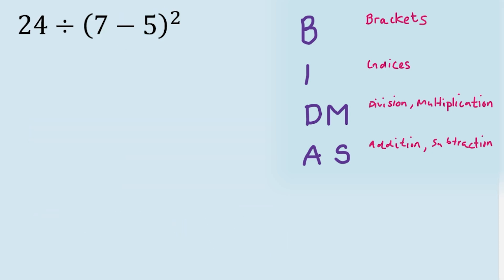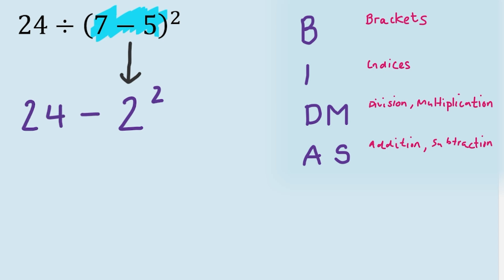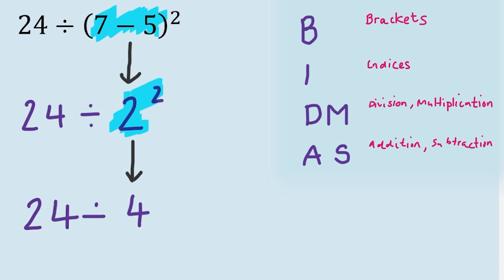Next: 24 divided by, in brackets, 7 minus 5, and that result is squared. Going through BIDMAS — do we have any brackets? Yes: 7 minus 5 is 2. The question then looks like 24 divided by 2 squared. The next operation after brackets is indices — we've got 2 squared. 2 squared is 4. So the calculation becomes 24 divided by 4, which is 6.